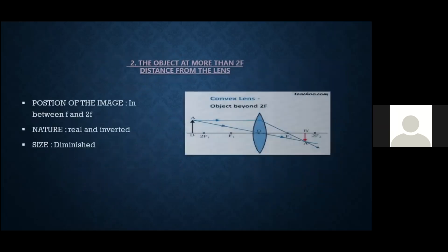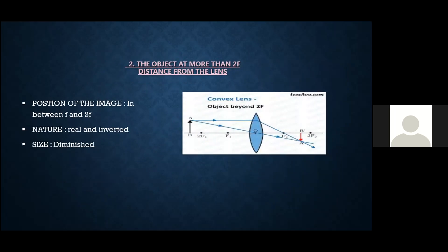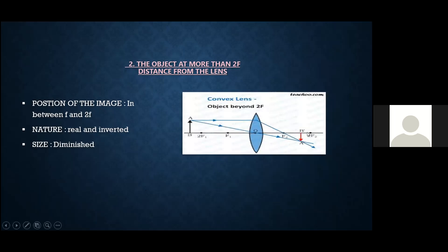The next case: the object at more than 2F distance. Here, AB is the object. We always need to choose two out of the three rules to form an image. The first ray is parallel to the principal axis, and the other goes through the optical center. When the object is more than 2F distance, the image will form between F and 2F. The position of the image is between F and 2F, the nature is real and inverted, and the size is diminished.